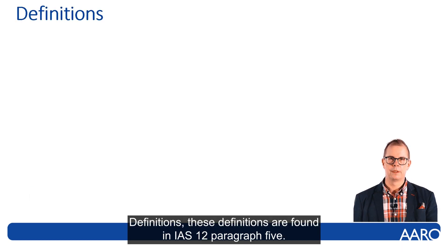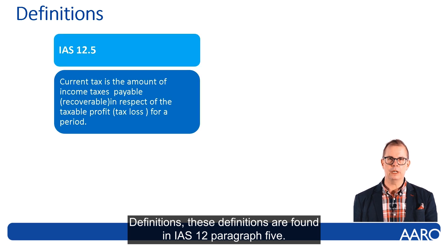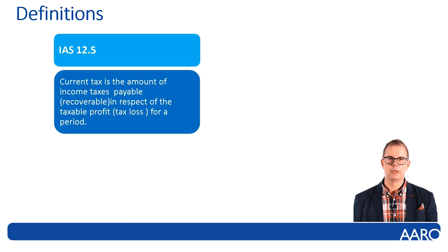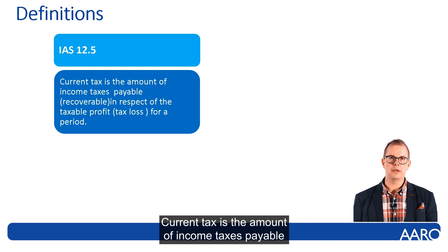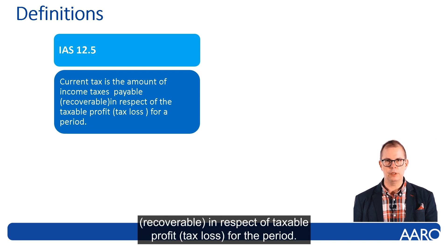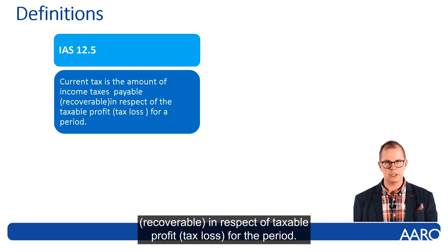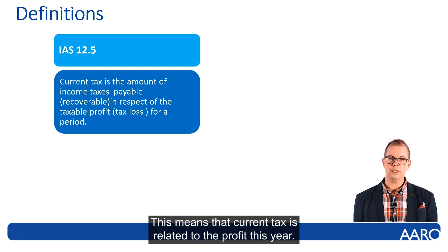Definitions. These definitions are found in IAS 12 paragraph 5. Current tax is the amount of income taxes payable or recoverable in respect of taxable profit or tax loss for the period. This means that current tax is related to the profit this year.